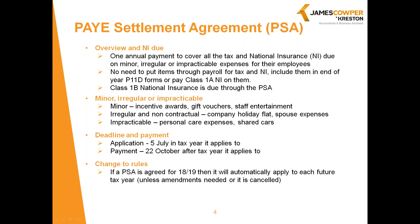For benefits that would otherwise attract Class 1 employee and employer National Insurance through the payroll, the PSA must be put in place before the benefit is actually provided to the employees. This is because Class 1 primary and secondary NI has to be accounted for in real time through the payroll, so if you apply for the PSA after it's been payrolled, too much National Insurance would have been paid. For any other benefits, you have until the 6th July after the end of the tax year to put the agreement in place.